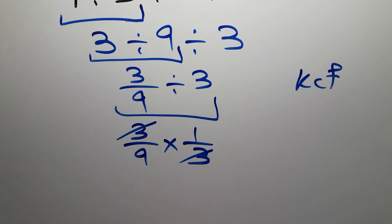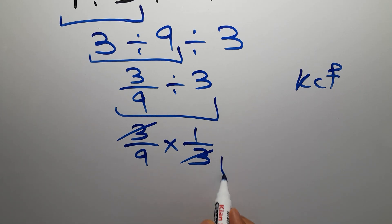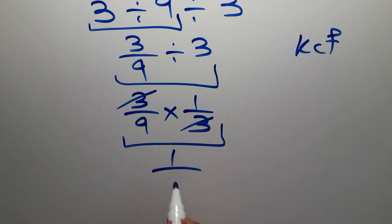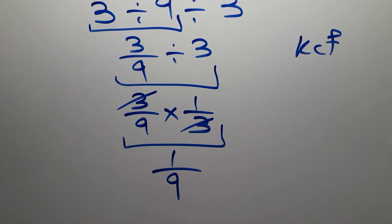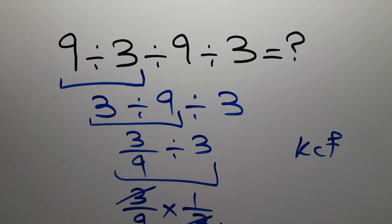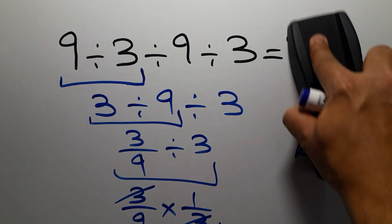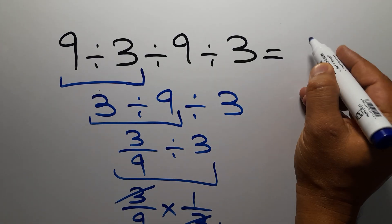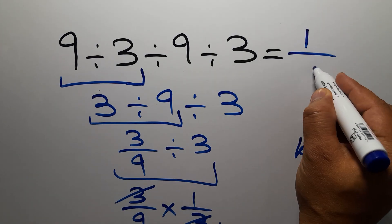We can easily cancel this 3 and this 3, and we have just 1 over 9. This is our final answer to this problem. The correct answer is 1 over 9.